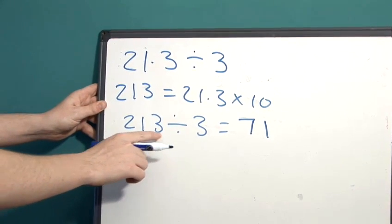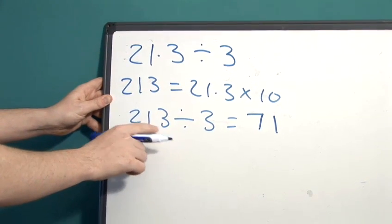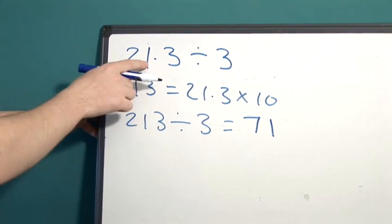But it is easier to see that 70 times 3 is 210, and 1 times 3 is 3, to work this out, rather than just knowing that the answer is the following.